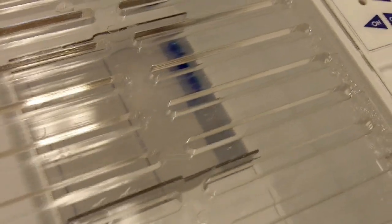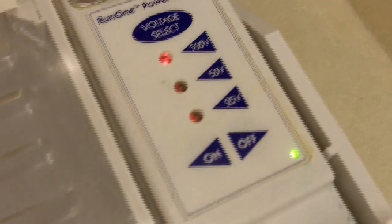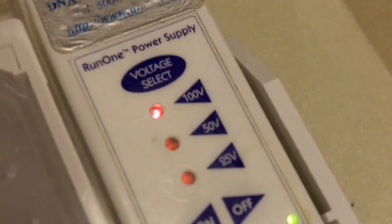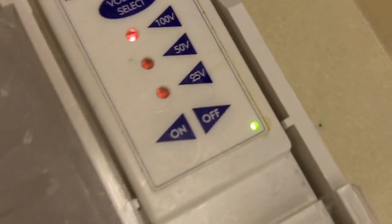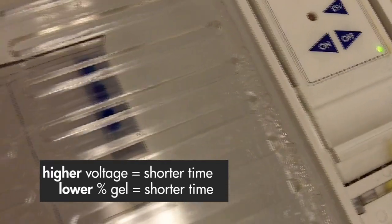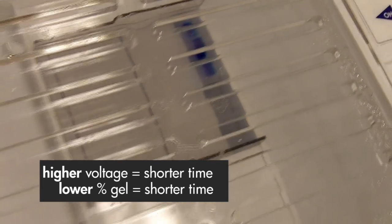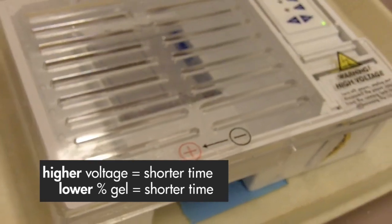Right now the gel is running on 100 volts. The voltage you use depends on how big or how long the gel is and we'll run it for half an hour. The time depends on the percentage of the gel you have and the voltage that you run the gel at. Higher voltage will take shorter time for the DNA to migrate and lower percentage of the gel will require a shorter amount of time for the DNA to migrate.